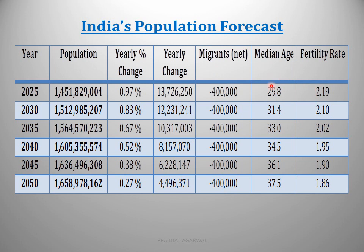Migrants will be almost the same. Median age will rise considerably to 37.5, meaning India — also called Youngistan — will not remain as young then. Fertility rate, as medical sciences keep improving, is continuously decreasing and will come down to 1.86 by 2050.